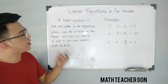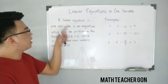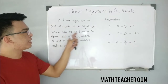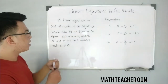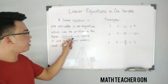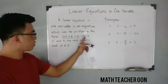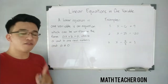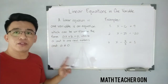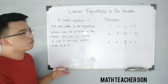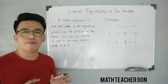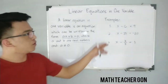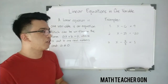To define linear equation in one variable: a linear equation in one variable is an equation which can be written in the form ax plus b is equal to zero, where a and b are real numbers. Take note that a is not equal to zero. To help you visualize and understand this definition better, I want you to examine these three examples of linear equations in one variable.